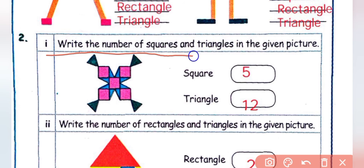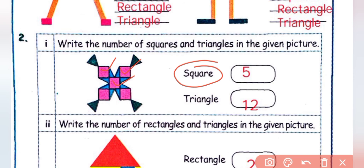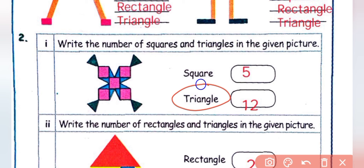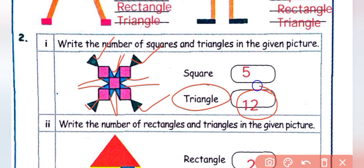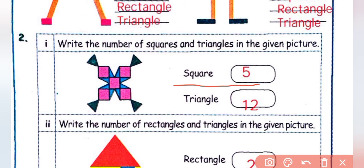Next, write the number of squares and triangles in the given picture. In the picture, count the squares: 1, 2, 3, 4, 5 — the number of squares is 5. Next, count the triangles: 1, 2, 3, 4, 5, 6, 7, 8, 9, 10, 11, 12 — the number of triangles is 12. So in the picture: squares = 5, triangles = 12.